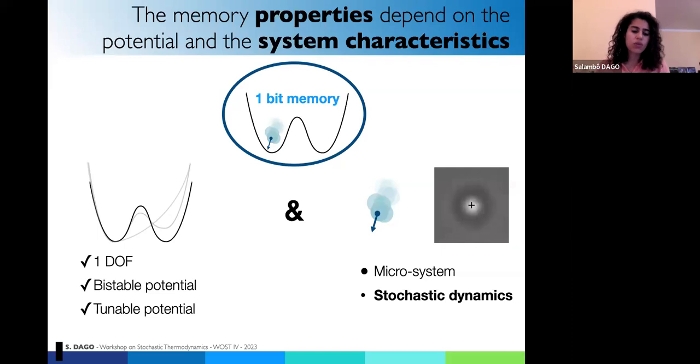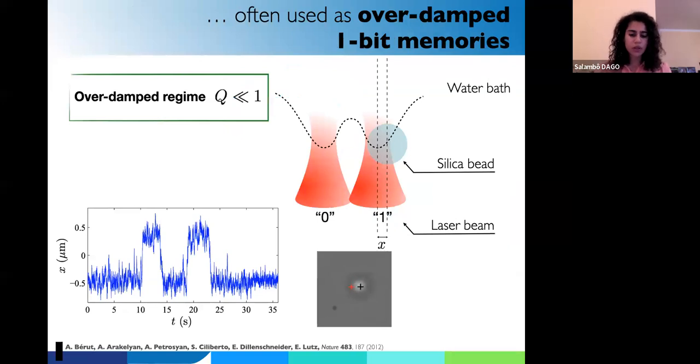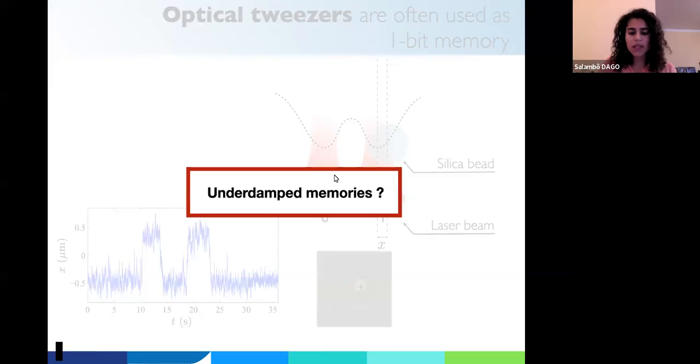Usually, if we want to scale down to the thermal energy ladder, we will use micro systems that are ruled by stochastic dynamics. One way to do that is, for example, to use a particle in water trapped by optical tweezers. If it's on the left tweezers, it's zero, on the right tweezers, it's one. Some teams did it already. You can see the quotes there. And the characteristic of this system is to be overdamped because it's evolving in water, which is a very viscous fluid. And therefore, you are with a quality factor much lower than one. And what we did was basically to wonder, can we do the same this time with underdamped memories.